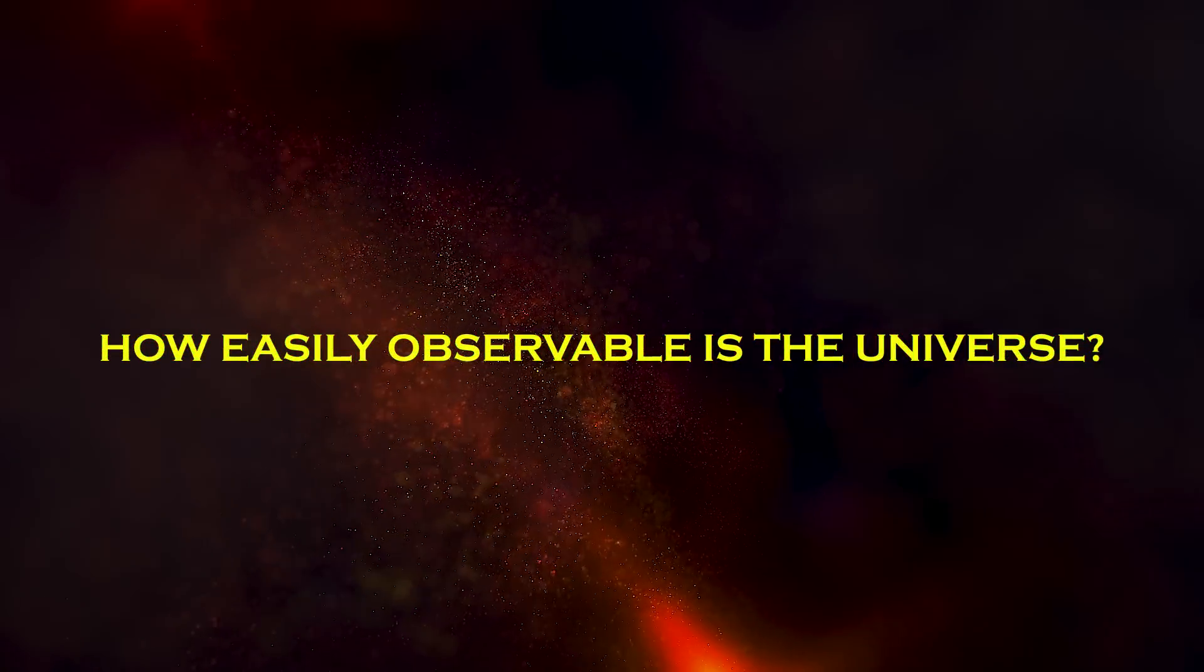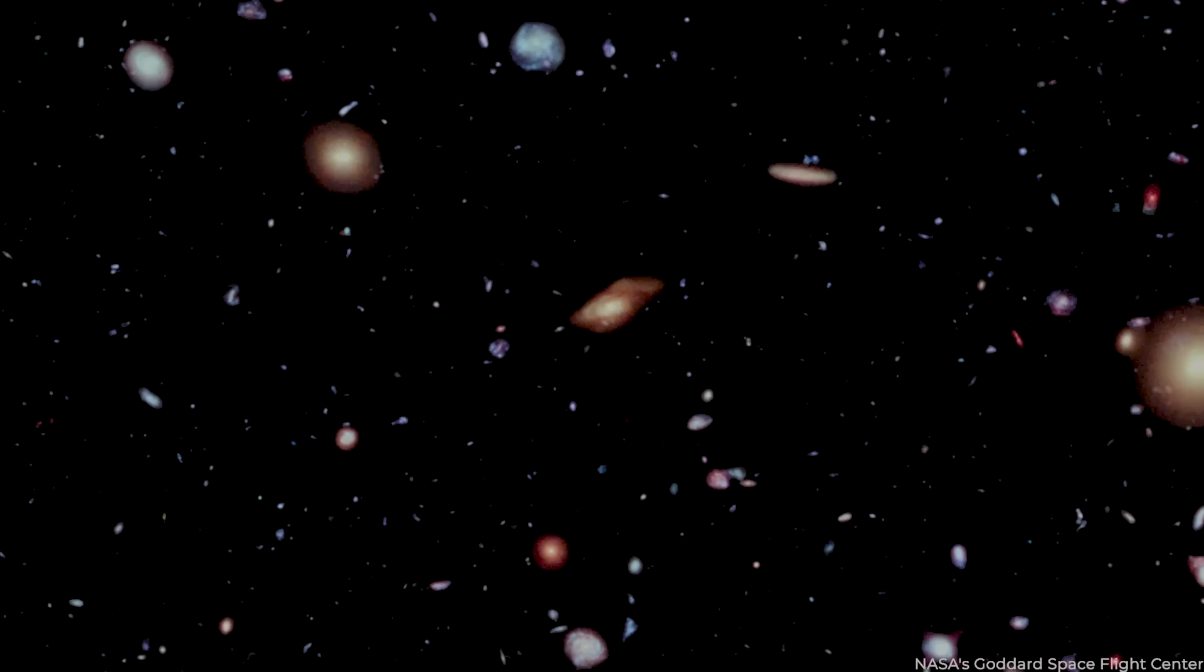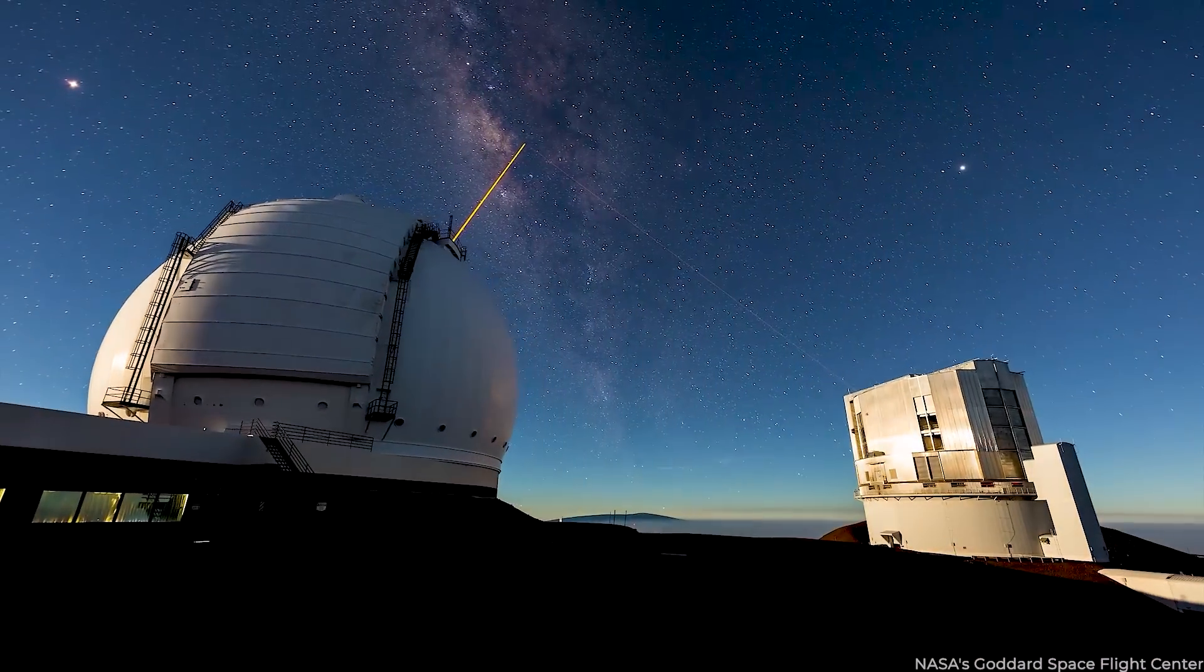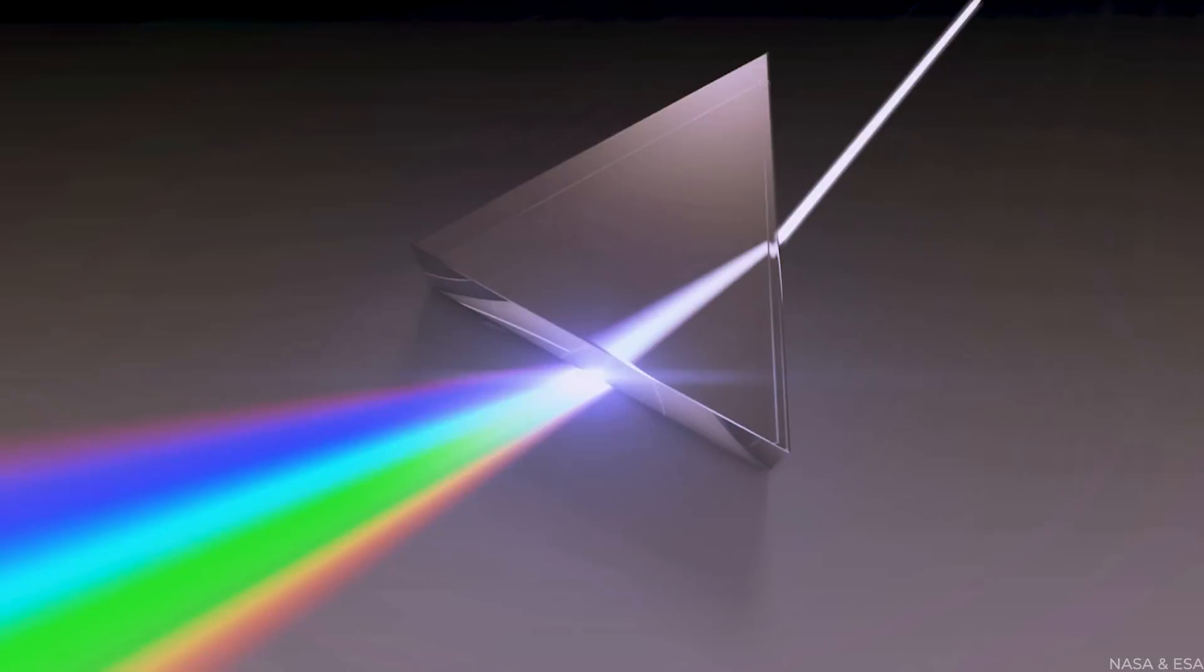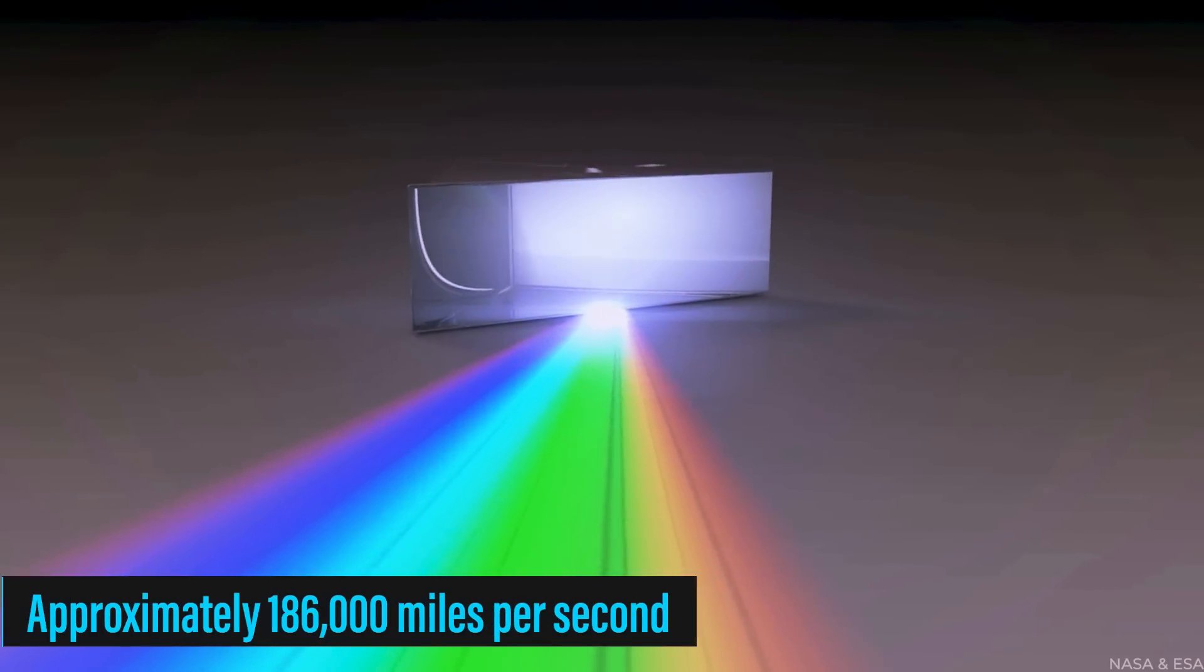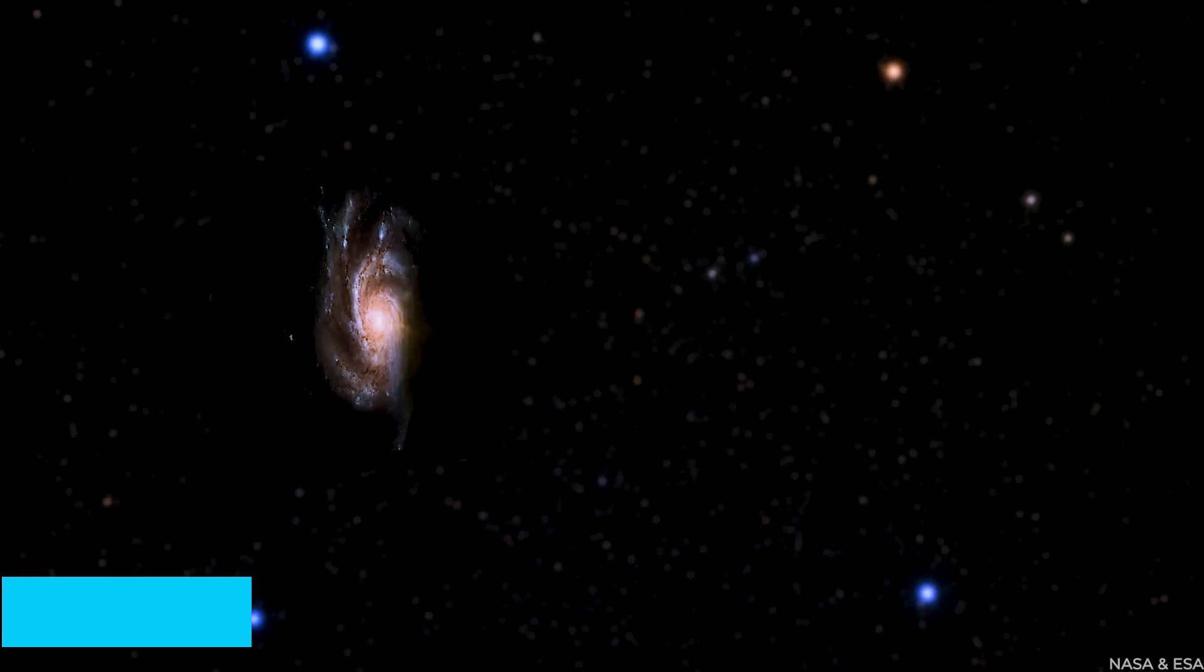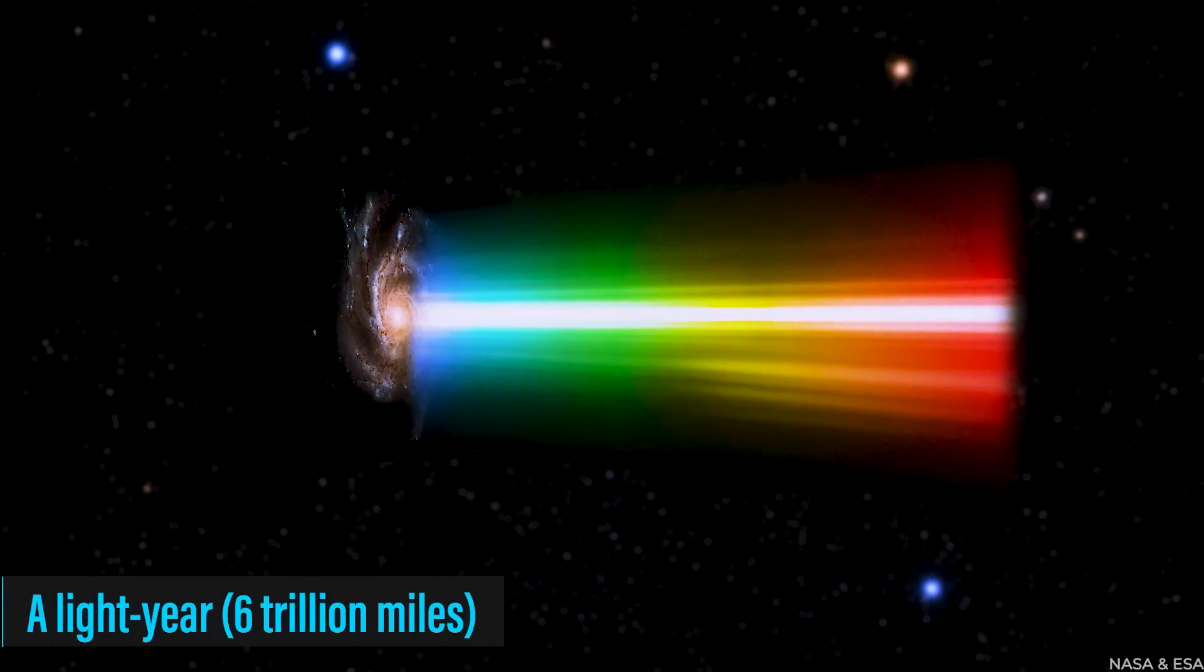How easily observable is the universe? Picture it like this. It's the part of the universe we can currently see using our most sophisticated instruments. But why can't we see everything? Well, the culprit is the speed of light. You see, light is like a cosmic speed racer, zipping around at approximately 186,000 miles per second. This distance in a year adds up to nearly 6 trillion miles, which we call a light year.